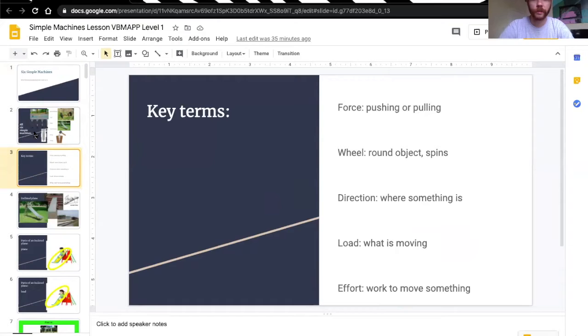Some words that we use to describe simple machines are force, which is when you push or pull something. A wheel, which is a round object that spins in a circle. We use the word direction, which is where something is. So something might be in the direction up or to the side or behind.